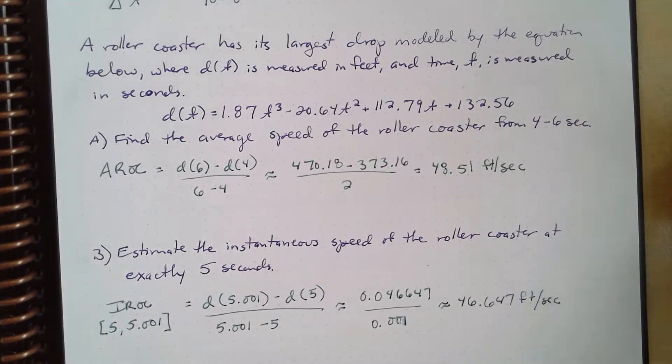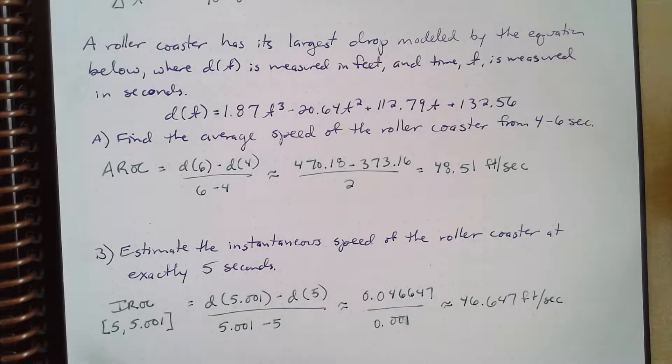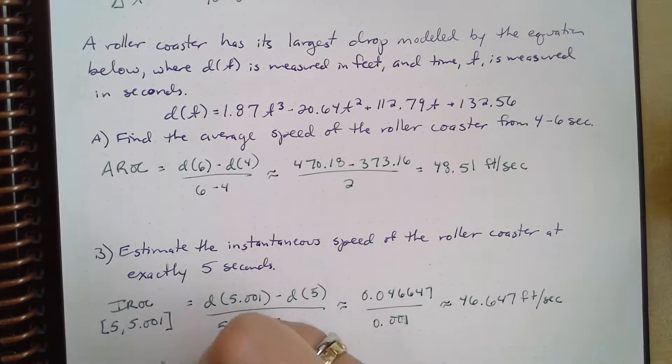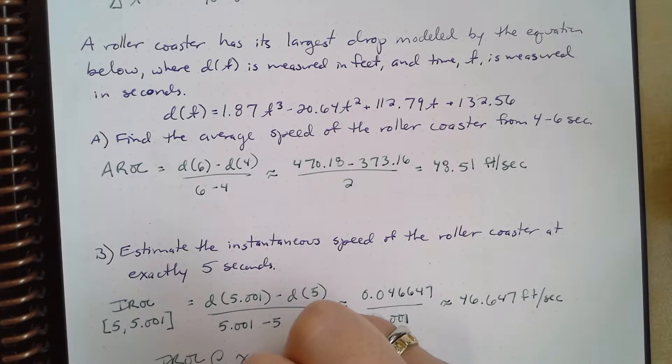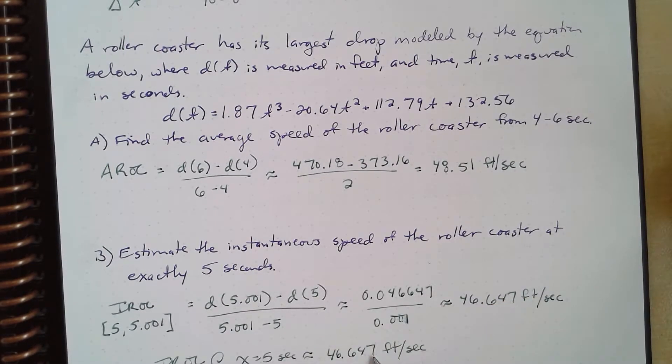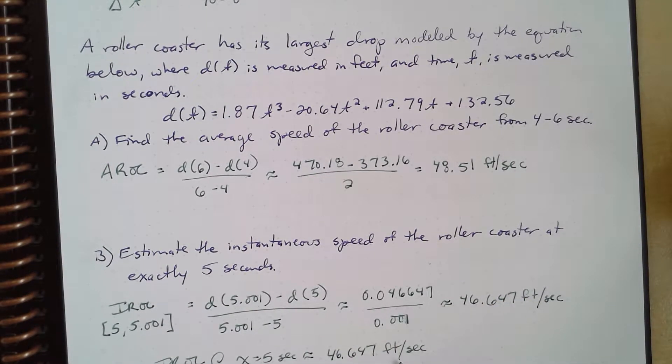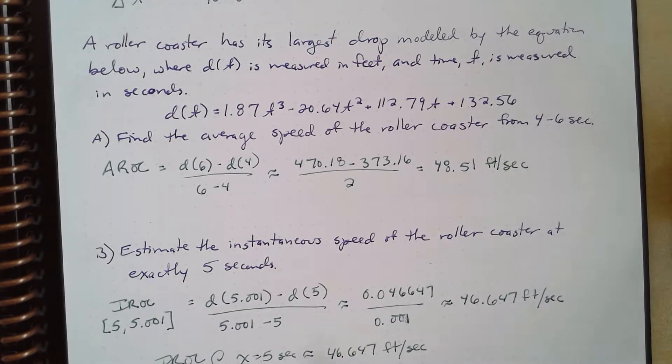I want to take a moment here just to note that when you are writing on the AP exam, you can lose points for not labeling on your free response questions. So we will be doing that throughout the course. So the instantaneous rate of change at x equals 5 seconds is approximately 46.647 feet per second. Also note that I use three decimal places. So labeling, three decimal places. You need both on the AP exam. Do not forget that.